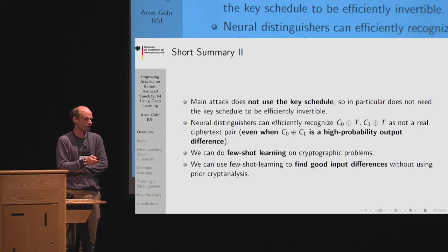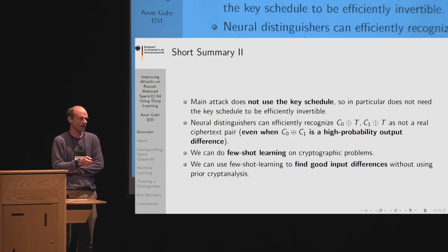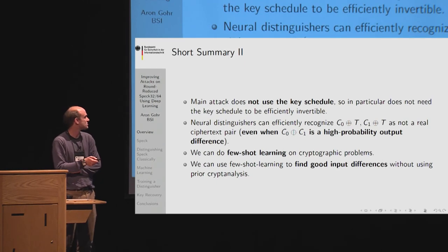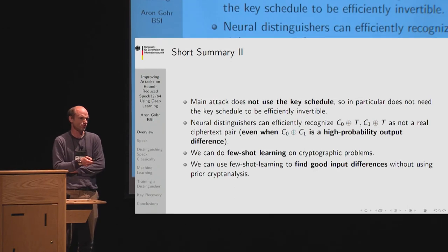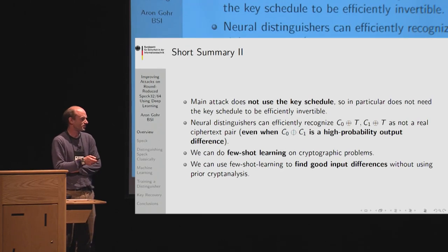Another difference from previous attacks is that this attack does not use the key schedule. The best previous attacks generate a large number of candidates for the last four round keys and then test every one against a known plaintext-ciphertext pair — which is only possible because the key schedule is efficiently invertible. Our neural network-based attack doesn't need that, because we can solve for the round keys one by one. So we could break 11 rounds of SPECK with essentially the same complexity even if it used a pre-image-resistant key schedule.